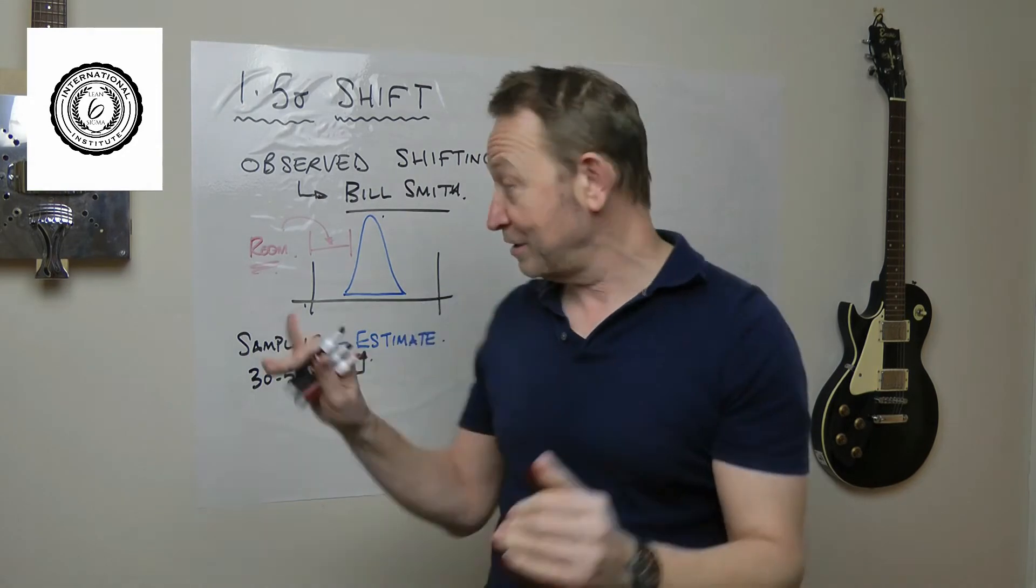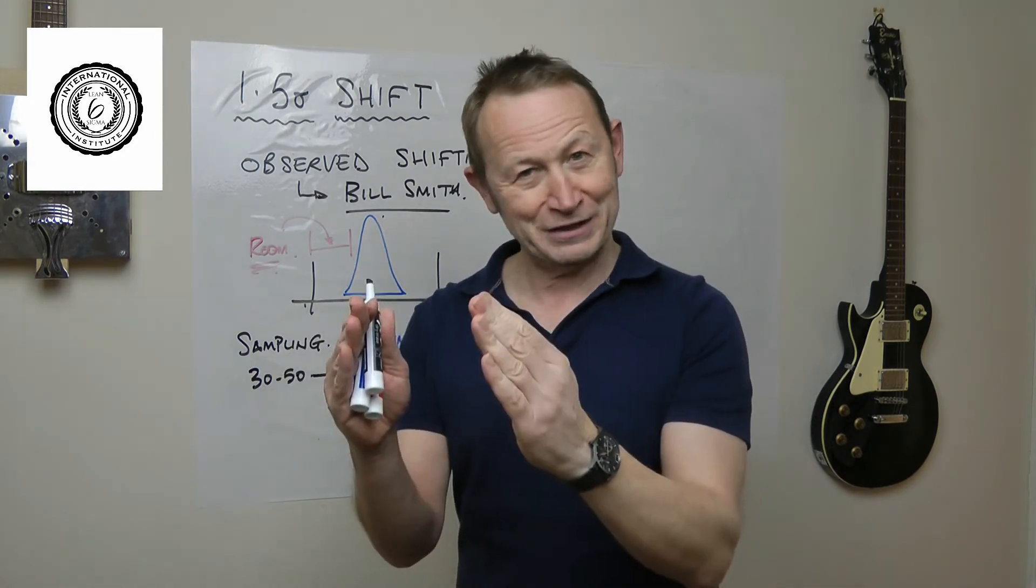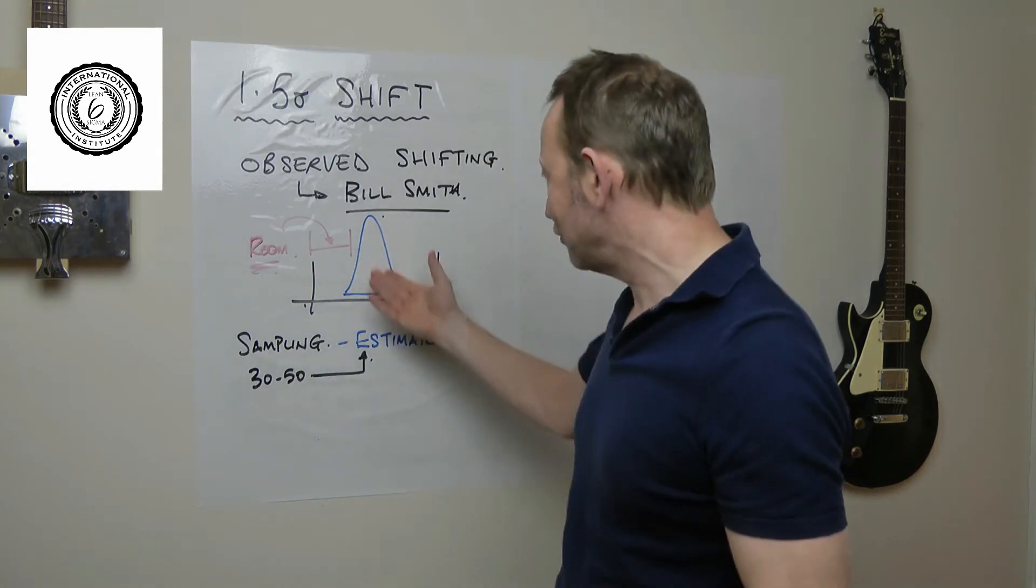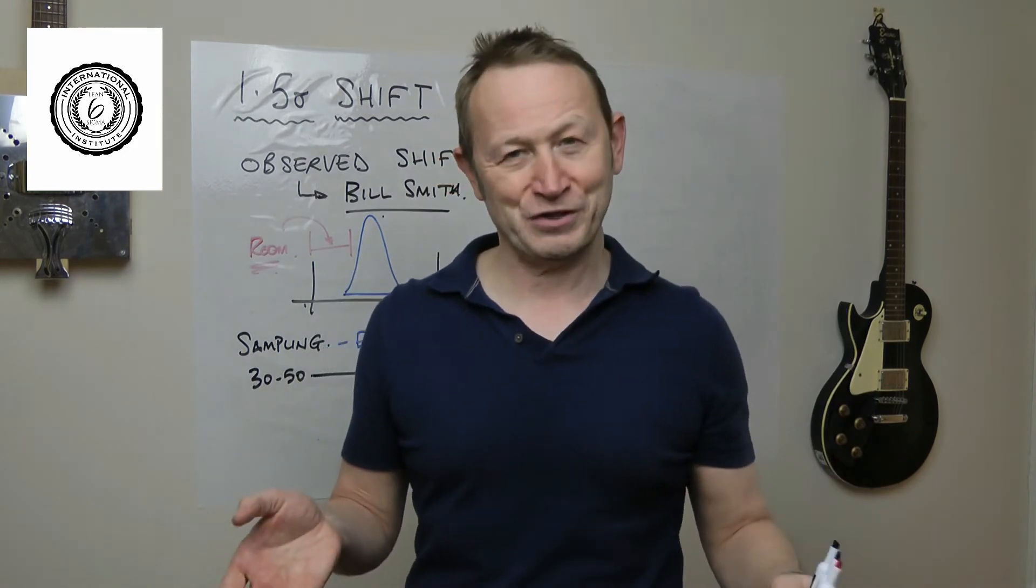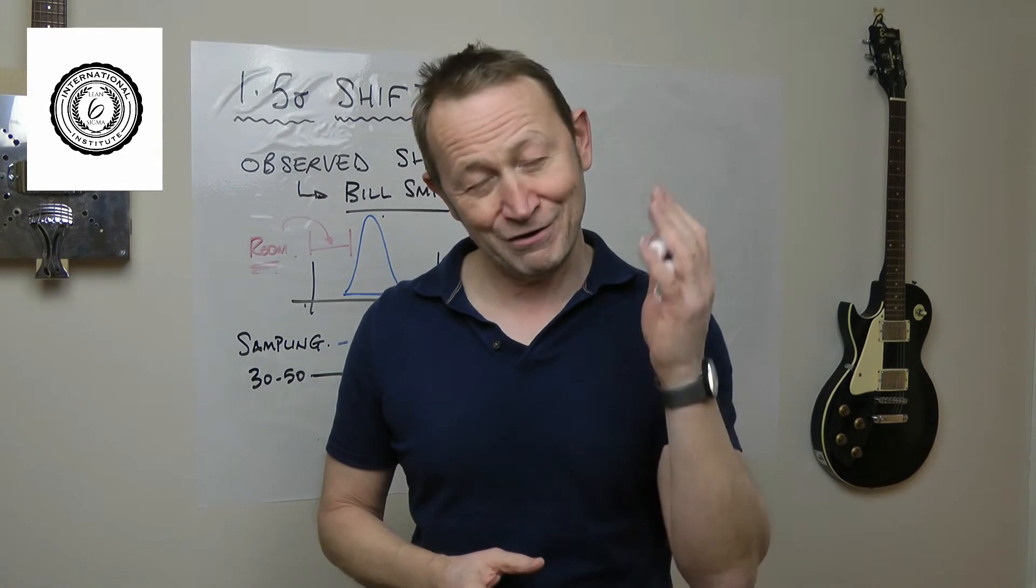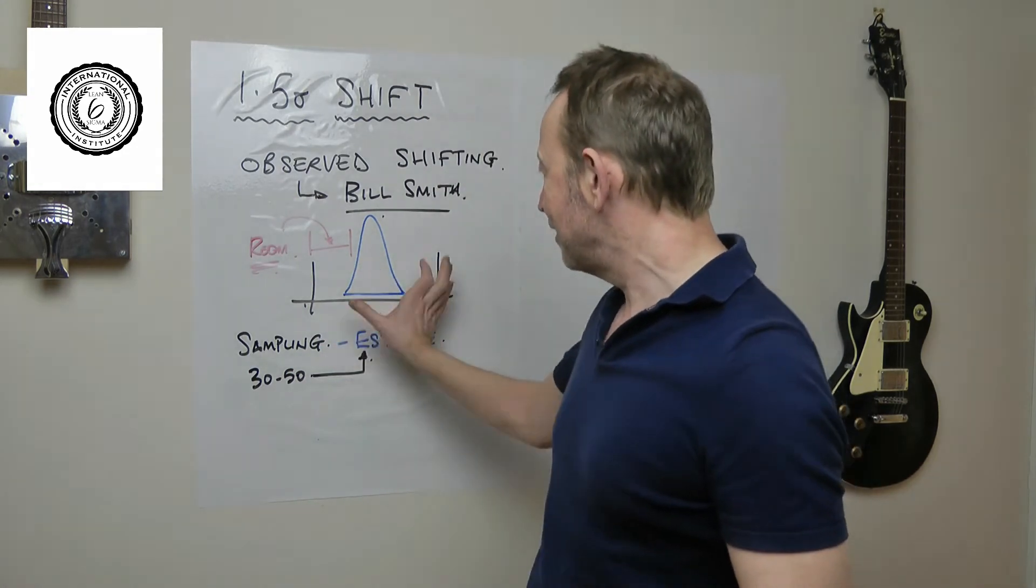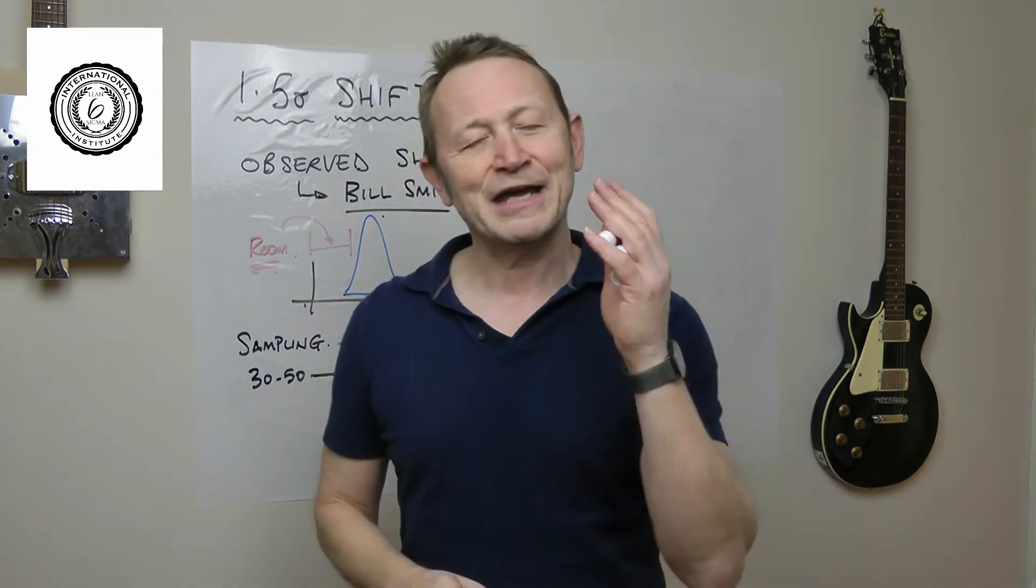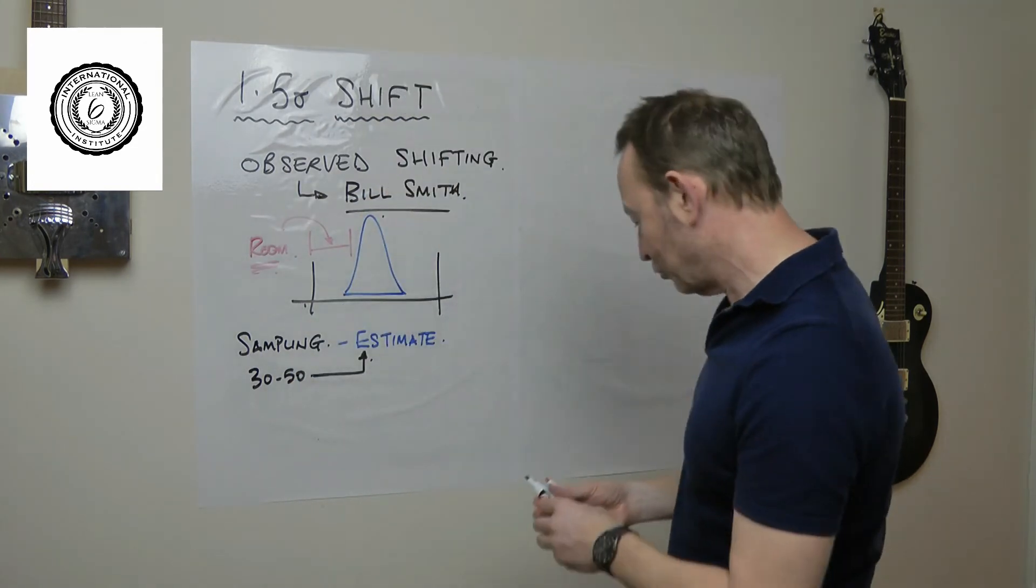It's going to be somewhere where the estimate tells you, but it could be a little bit to the left and a little bit to the right. So one of the first reasons is you can never know where your process is, not exactly. Therefore, if you don't know where it's going to sit, and maybe it's going to sit a little bit to the left or right, it would be great if you had some room to deal with that.